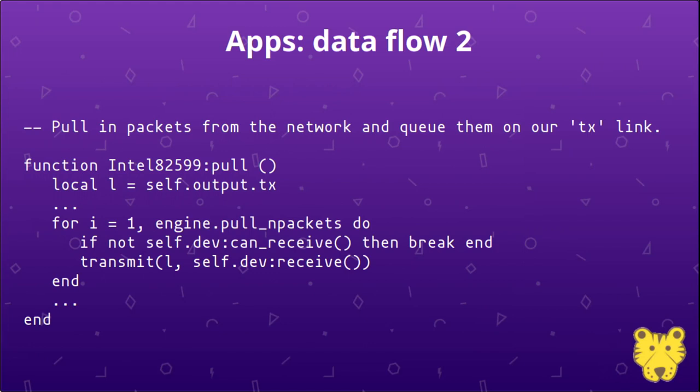If an app has a pull callback, it will be executed at the beginning of a breath to inhale packets into the application. This example is from a device driver for Intel NICs — it only has an output link because it's pulling in packets from the device and putting them on the output link for other apps to consume. It loops up to the batch size constant, checks if the device has a packet ready, and if so transmits that packet from the device onto the output link.